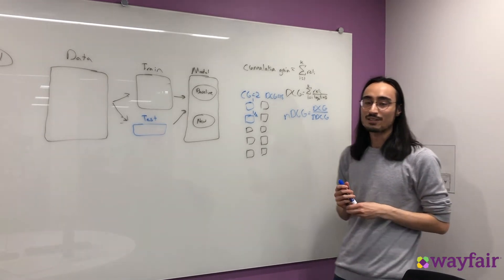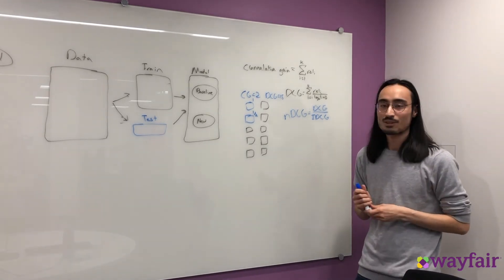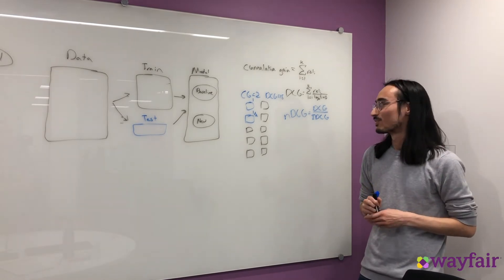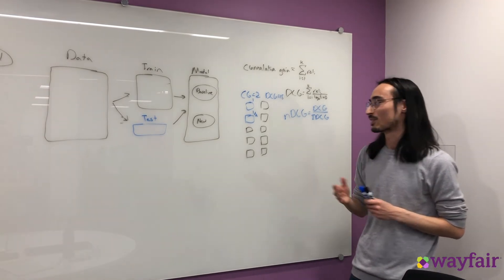So what is the idealized discounted cumulative gain? Well, all it's saying is if I had a perfect sort, what would the DCG be? In order to actually visualize this, let's go back to our example.